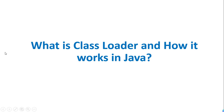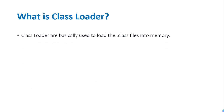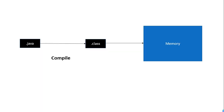What is class loader and how it works in Java? Class loaders are basically used to load a .class file into the memory. Whenever we write any Java program it has the extension .java, and when we compile this program it gets converted to the .class file. We have to load this .class file into the memory so that our program can make use of it, and this loading is done by the class loader.